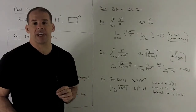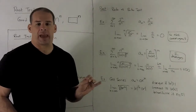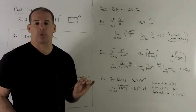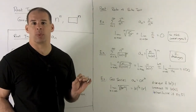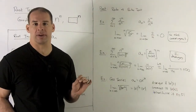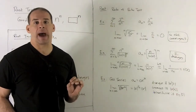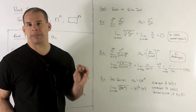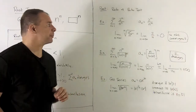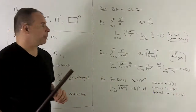The proof of the root test is essentially the same as the proof for the ratio test, except the inequality is handled a bit differently — you're taking things to powers instead. We'll skip that and look at some examples.